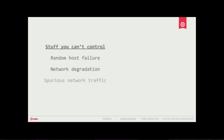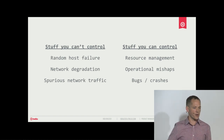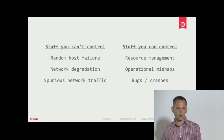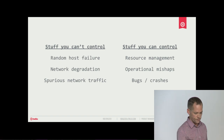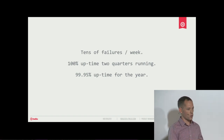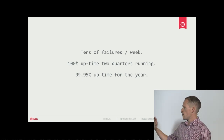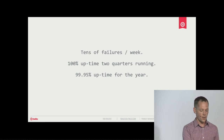Things break for a bunch of reasons. In a cloud service, hosts fail at random, networks degrade, you have to deal with people on the Internet sending traffic to your servers that you may not expect. You also have human elements — things like operational mishaps, inadequate testing, and bugs. These things are happening all the time at Twilio; we have tens of service failures a week, some alert is going off, someone is looking into something. But we've been able to deliver 100% uptime for the last two quarters, and 99.95% uptime for the year in our WebRTC service.